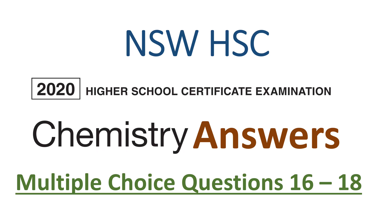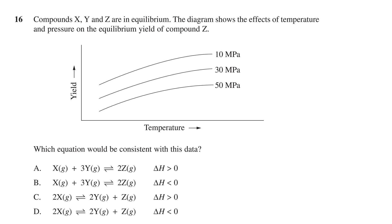In this video we'll go over the answers to questions 16 to 18 of the 2020 NSW HSC chemistry exam. Question 16 states compounds X, Y and Z are in equilibrium. The diagram shows the effects of temperature and pressure on the equilibrium yield of compound Z.